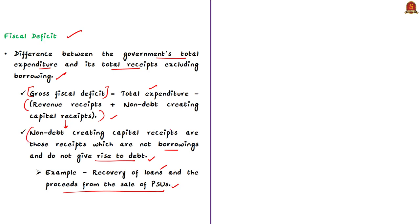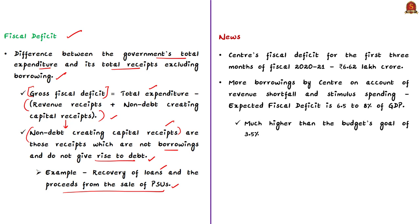The news article states that the Centre's fiscal deficit for the first three months of financial year 2020-21 was about ₹6.62 lakh crore, almost 83% of the budgeted target for the whole financial year. If the Centre borrows more to meet revenue shortfall due to COVID-19 impact and promised stimulus spending, the fiscal deficit may become 6.5% to 8% of GDP — much higher than the budget goal of 3.5%.